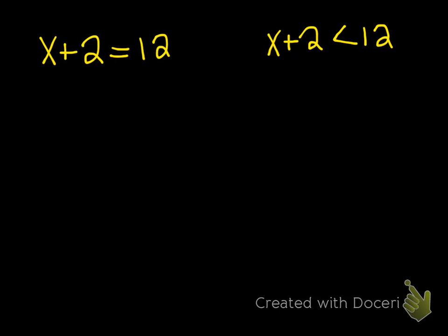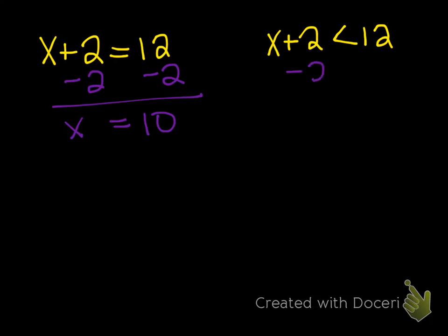Now we're going to go ahead and solve both. The one on the left is just a simple equation. So if we have x plus 2, we're going to subtract 2 from both sides, so x is equal to 10. We're going to do the inequality the same way — minus 2, minus 2. The 2's cancel out, we get x, and then 12 minus 2 is 10.